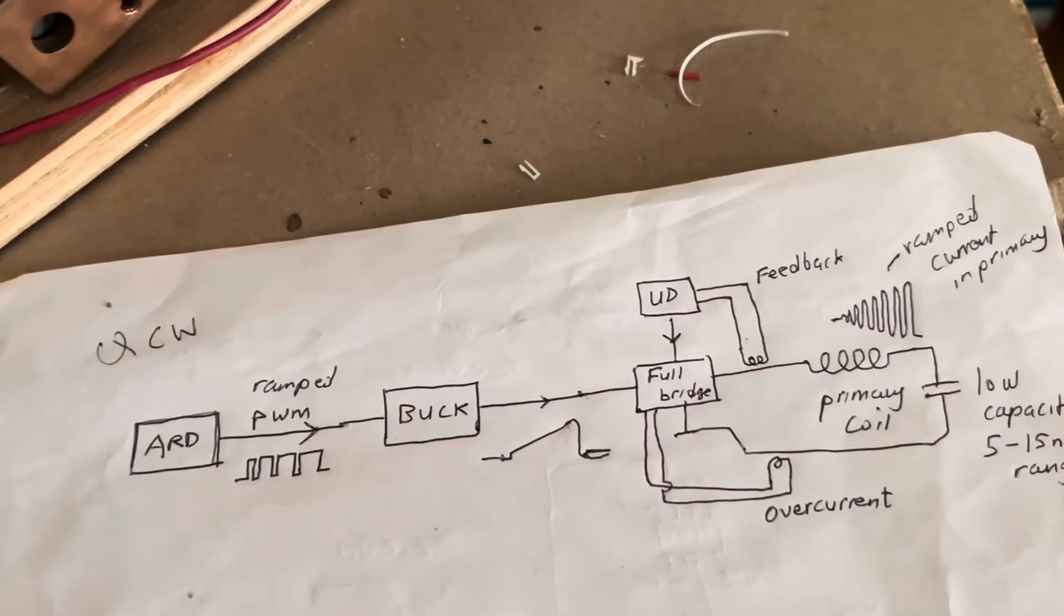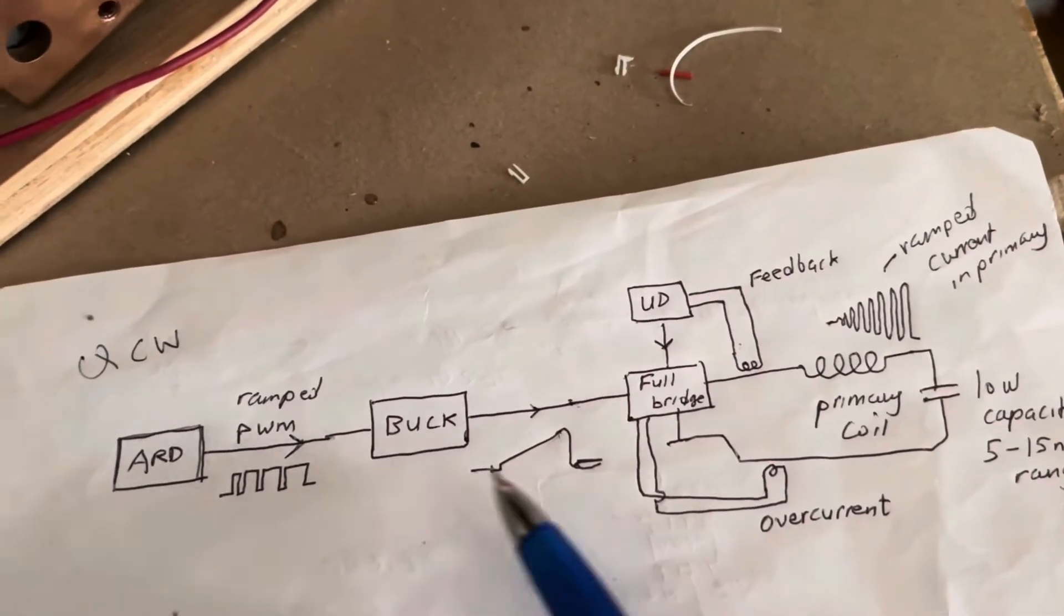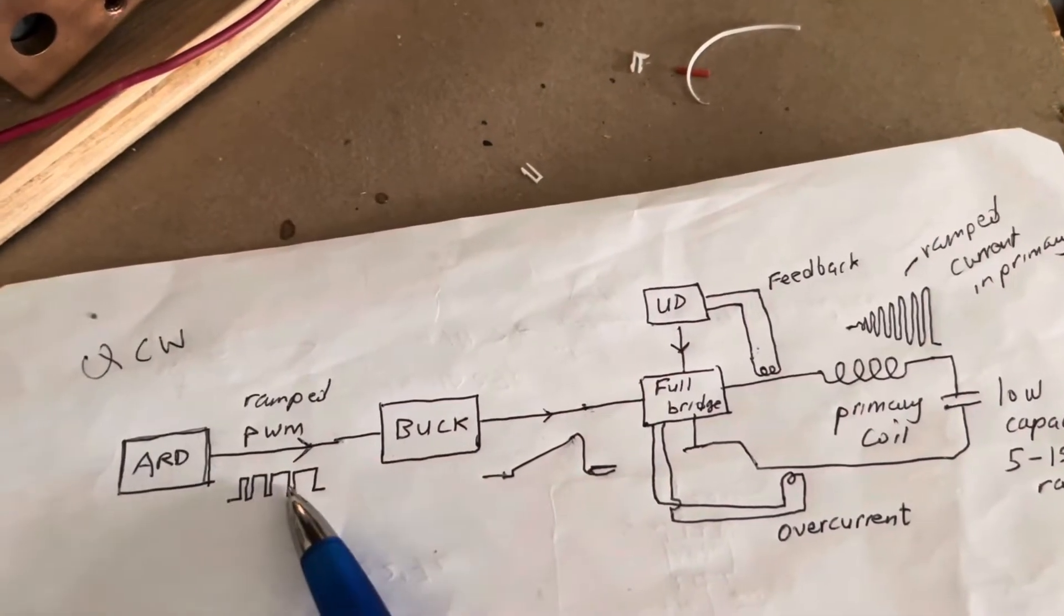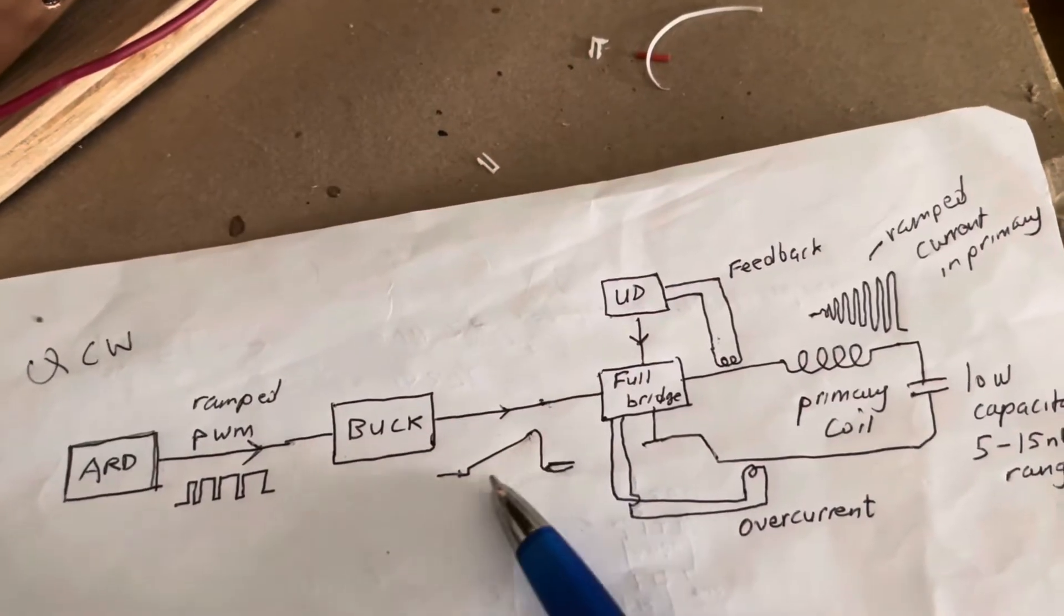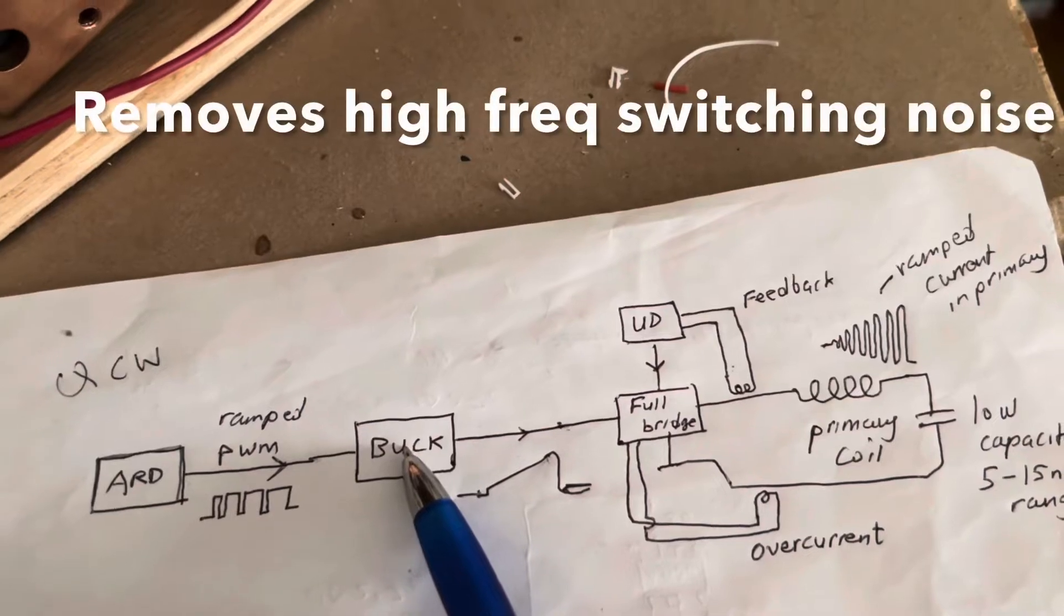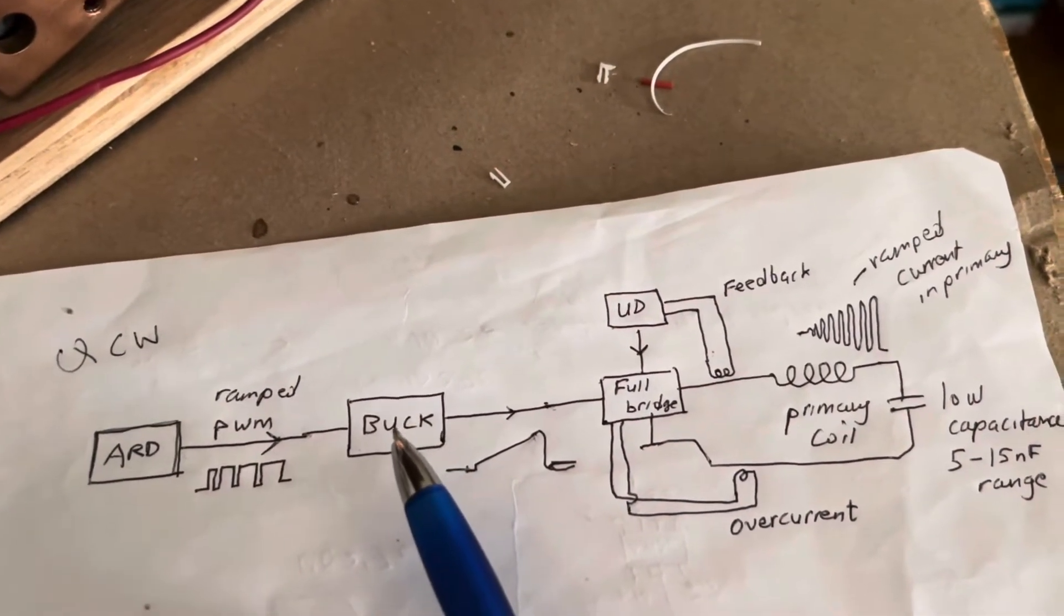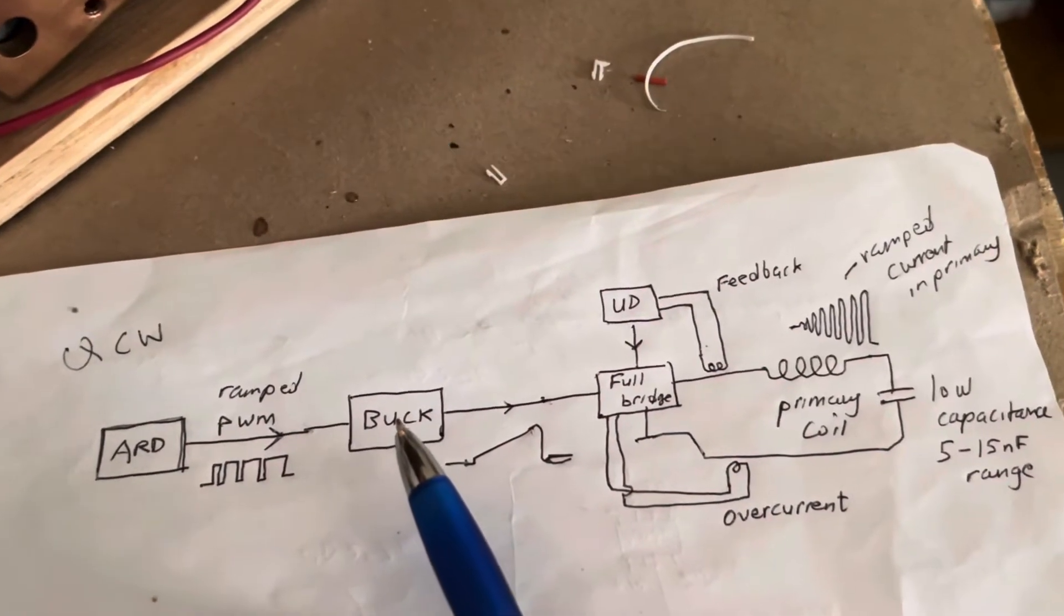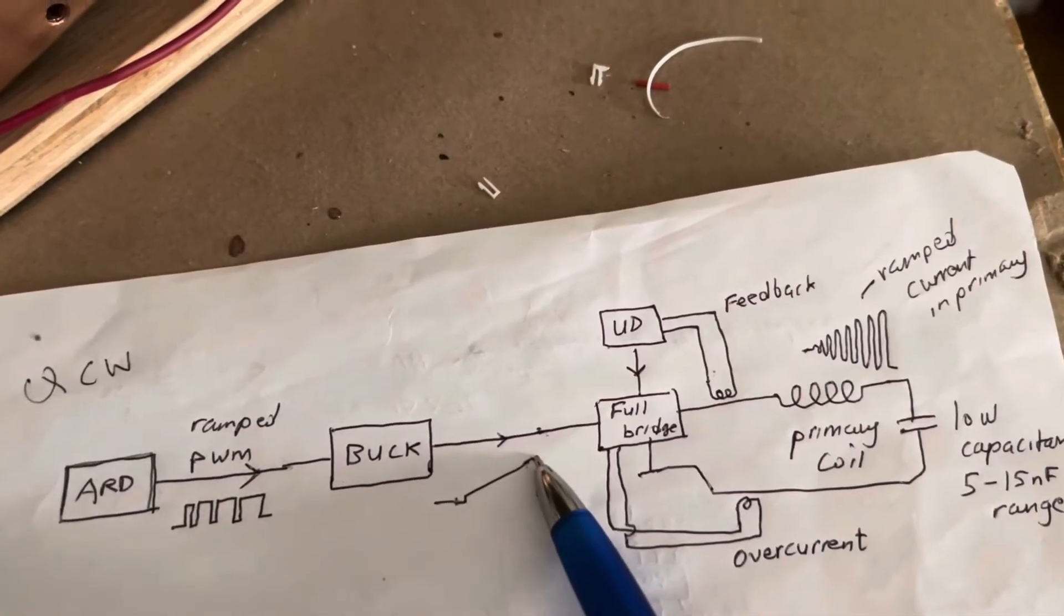This is then fed into a regular buck converter, which is just a way of taking a signal and converting it into a DC output. The DC output, if you have a ramped PWM signal, is a ramped DC output. Now this signal is smooth because a buck converter consists of an LC circuit, which is basically an inductor and a capacitor connected together in series, which acts as a smoothing circuit, so you get a smooth voltage rise.